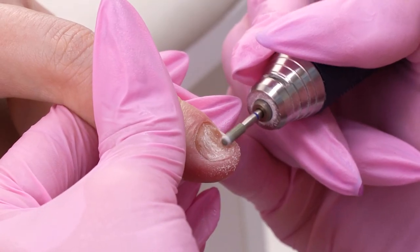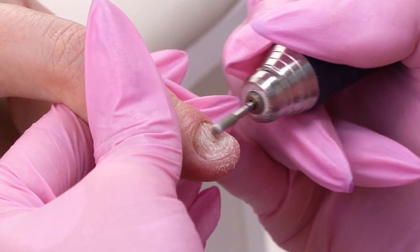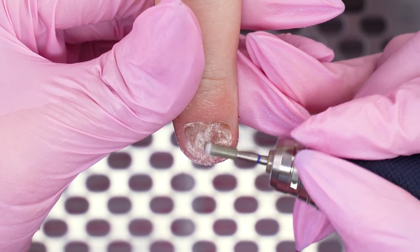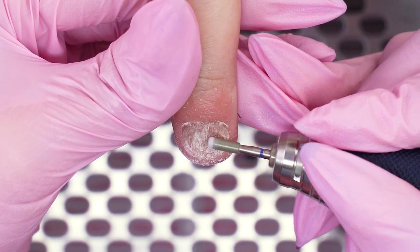I'm using a diamond drill bit. It's a blue rounded cylinder. I move downwards, not upwards, so as not to lift up the nail scales even more.